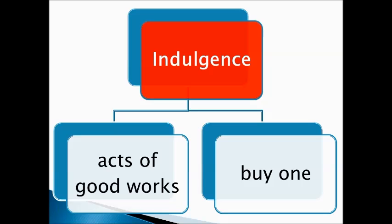An indulgence is basically a document signed by the Pope that would forgive one for their sins, which would make it much easier to get into heaven. There are two ways one could get an indulgence: you could do acts of good works for the poor, etc., or — the one they really had a problem with — you could buy an indulgence. People felt like it was morally wrong to buy a document from the Pope that would allow you to get into heaven. So indulgences were the big cause of the Protestant Reformation.